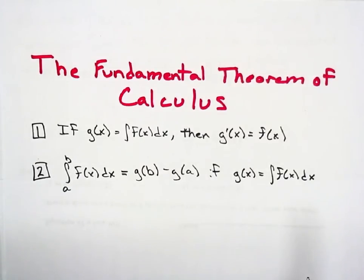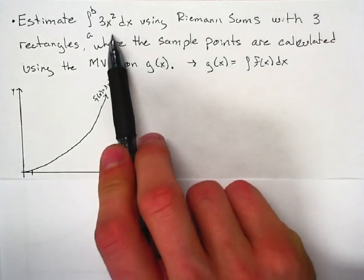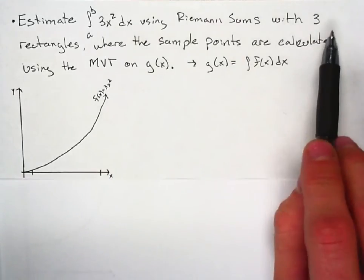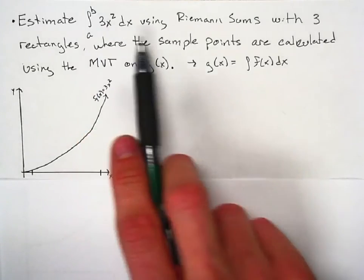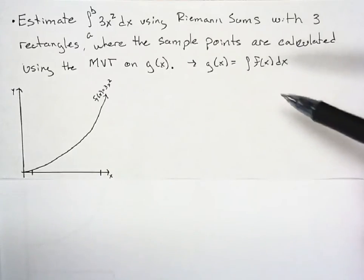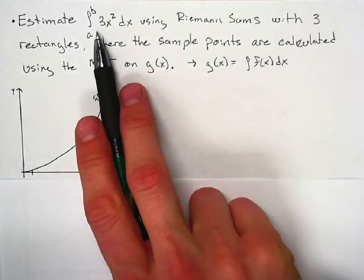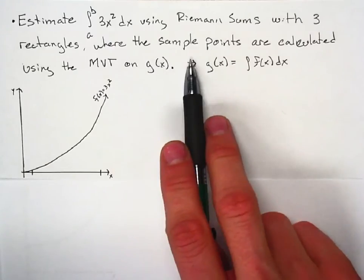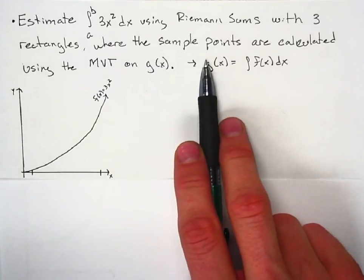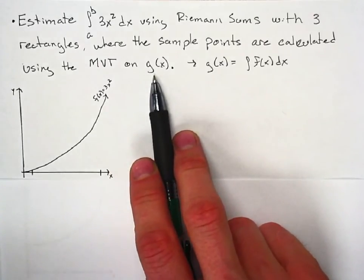To discuss the proof of that, we're going to do a little example. I call it a pseudo-proof because we're using a specific example of 3x squared and 3 rectangles. An actual proof would use just a general function and an n number of rectangles, but I find this does a better job of giving some concrete examples. So we're going to estimate the definite integral from a to b of 3x squared dx using Riemann sums with 3 rectangles, where the sample points are calculated using the MVT on g of x.